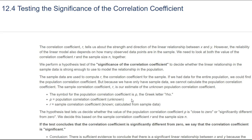If r is closer to positive 1, then that means they have a positive relationship — when x gets larger, y gets larger, and when x gets smaller, y gets smaller. They're doing the same thing. The closer you get to 0, the weaker those two relationships become until there is actually no correlation between x and y. And if you were looking at your data, the closer it is to 0, the more scattered your data is.